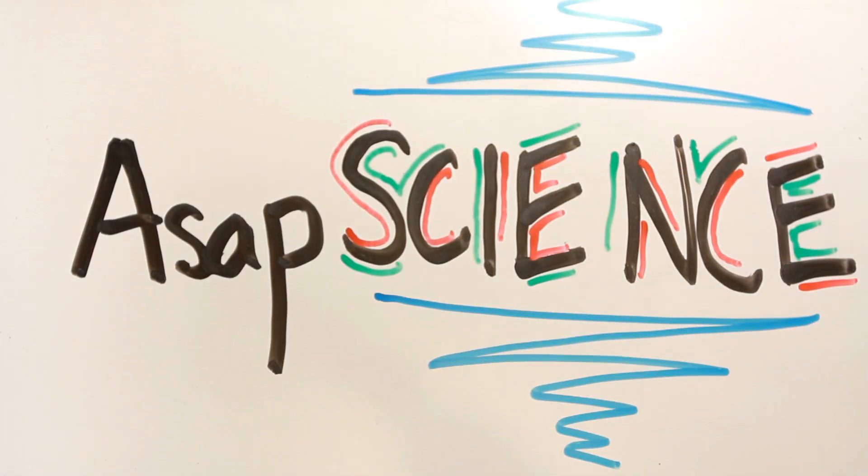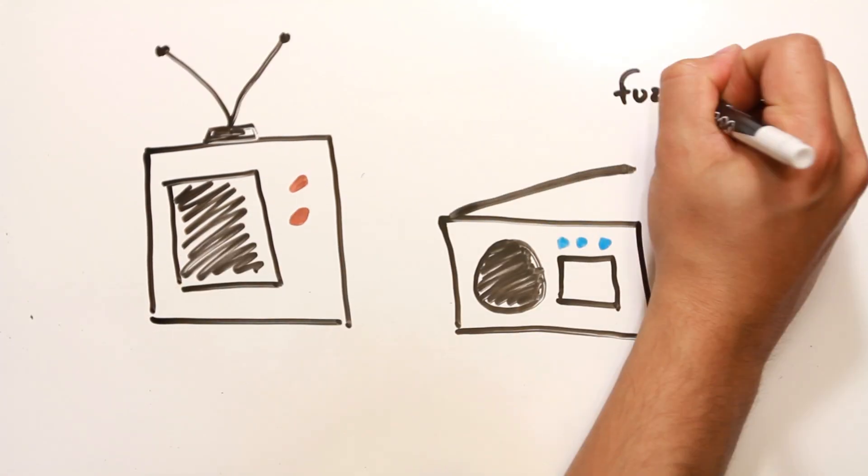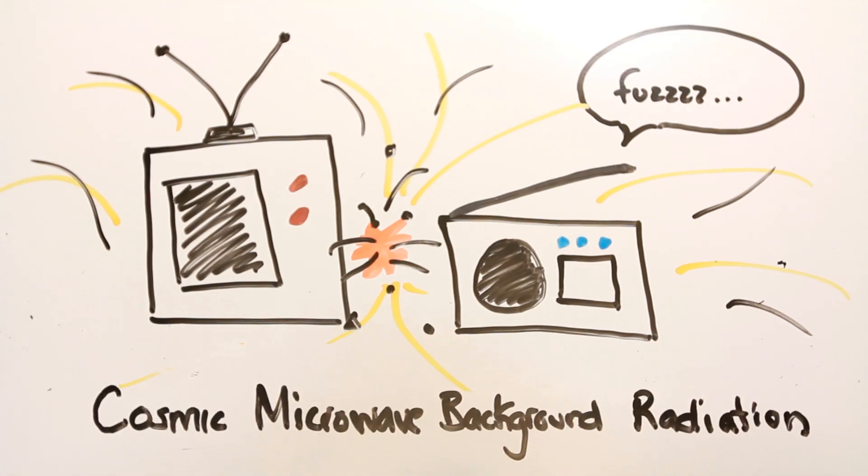Did you know that every time you flip on a TV or a radio to a static station, you're seeing or hearing remnants from the Big Bang? Sounds crazy, doesn't it? But about 1% of that static is actually coming from something called cosmic microwave background radiation.